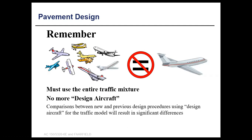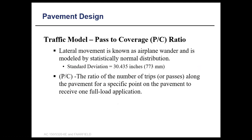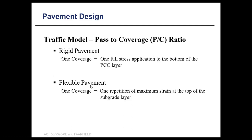Unlike the previous design approach where all aircraft are combined into a single aircraft model, the FAARFIELD program uses 198 aircraft models. Each model is unique with respect to the gross load and gear type, identified in accordance with FAA order, and eliminates wide-body terminology. The traffic model uses pass-to-coverage ratio, where lateral movement is known as airplane wander and is modelled by a statistically normal distribution. The ratio of number of passes to the number of times a specified point of the pavement will receive a full load application is used. For rigid pavement, one coverage is one full stress application; for flexible pavement, one coverage is one repetition at the top of the subgrade.